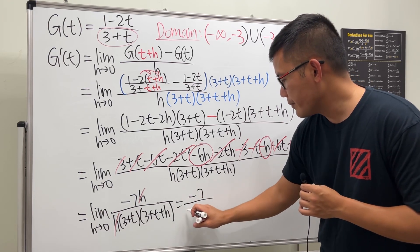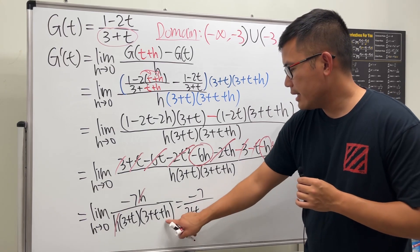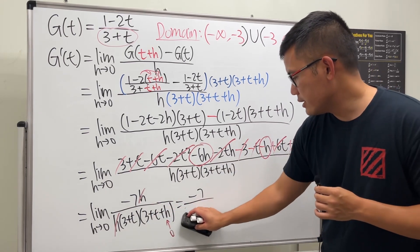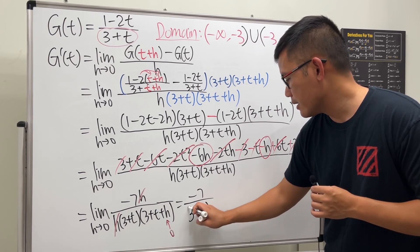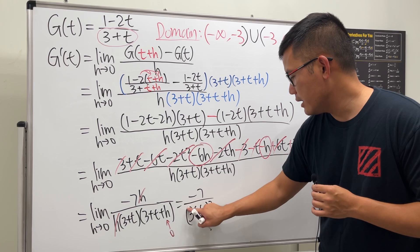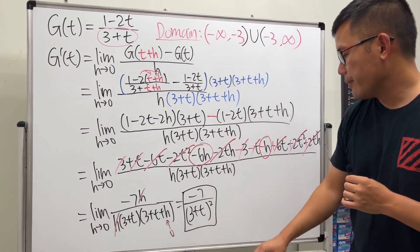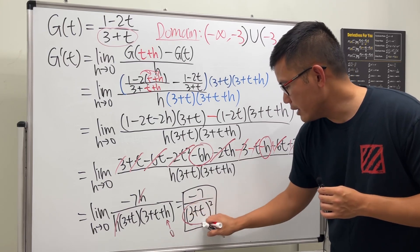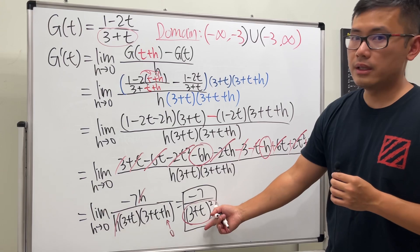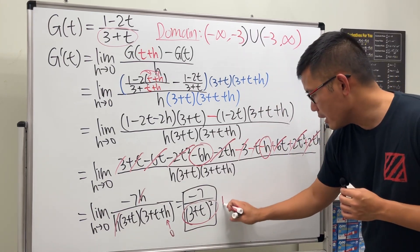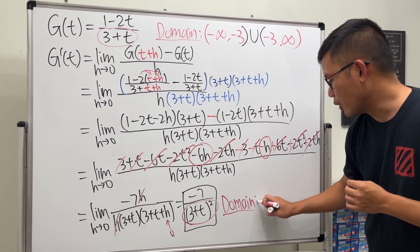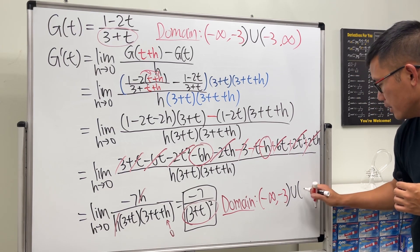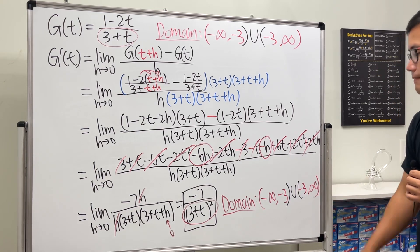After canceling h, we substitute h = 0, and (3 + t + h) becomes (3 + t). So the derivative is g'(t) = -7 / (3 + t)². For the domain of the derivative, the denominator still cannot equal zero, so t cannot equal -3. The domain is the same: negative infinity to negative 3, union negative 3 to positive infinity.